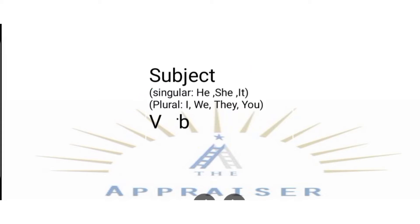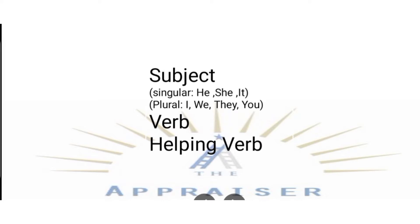Next is Verb. Verb is the action which is performed in the sentence — we call it verb. Action-showing words are verbs. Next is Helping Verb. These are words that help the main verb, the main action words. Next is Object. Object is the word on which the action is done — subject is the one working, and object is the one on which work is done.